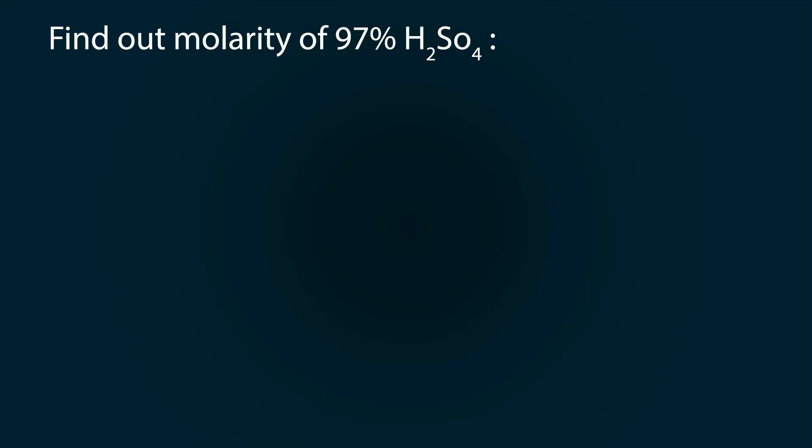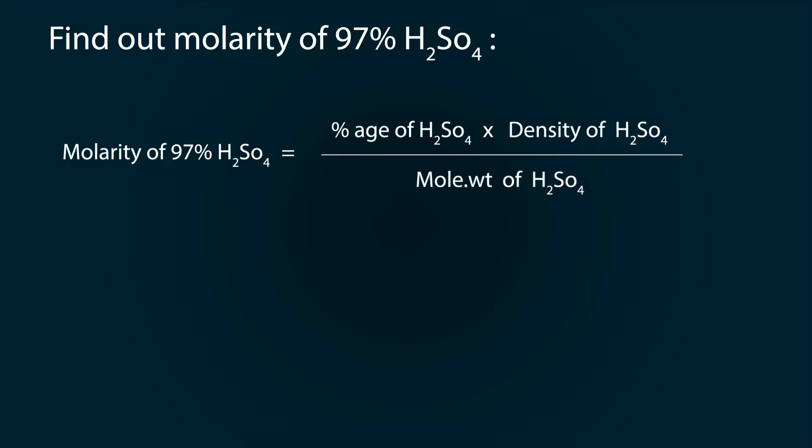Now let's find the molarity of 97% H2SO4. We will use the formula: molarity of 97% H2SO4 equals percentage of sulfuric acid multiplied by its density divided by its molecular weight, and multiply the whole by 10. Let's put the values: 97 multiplied by 1.84 divided by 98, which is the molar weight, and multiply by 10. We get molarity as 18.2.